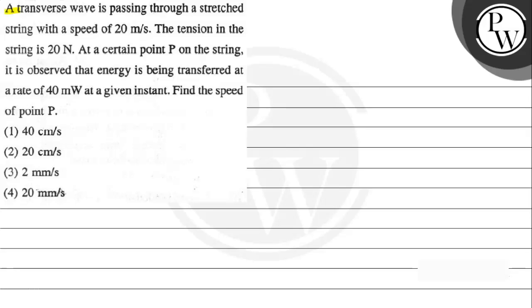Hello everyone, let's look at a given question. The question says a transverse wave is passing through a stretched string with a speed of 20 meters per second. The tension in the string is 20 Newtons. At a certain point P on the string, it is observed that energy is being transferred at a rate of 40 milliwatts at a given instant. Find the speed of point P.